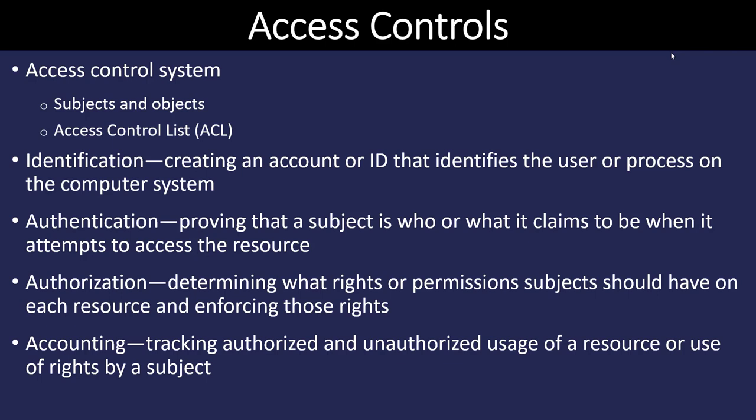To control access to our network there's some terminology we need to define ahead of time. When we talk about an access control system we're going to have subjects and objects. Subjects are users or software processes or anything else that's going to request access to a resource. An object is going to be the resource that the subject is asking for access or permission to use — it could be a network, a server, a database, a file, a printer.